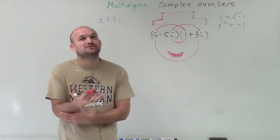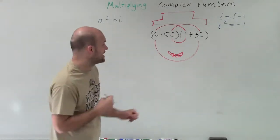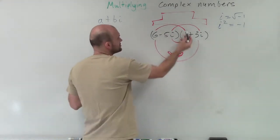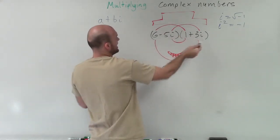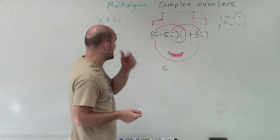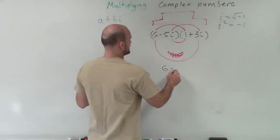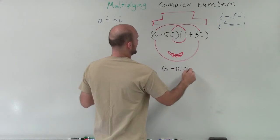Now, since I know this, I'm going to do this math a little bit in my head, but I'll still say it out loud. So 6 times 1 is going to be 6. Then I do the last, negative 5i times 3i is going to be a negative 15i squared.